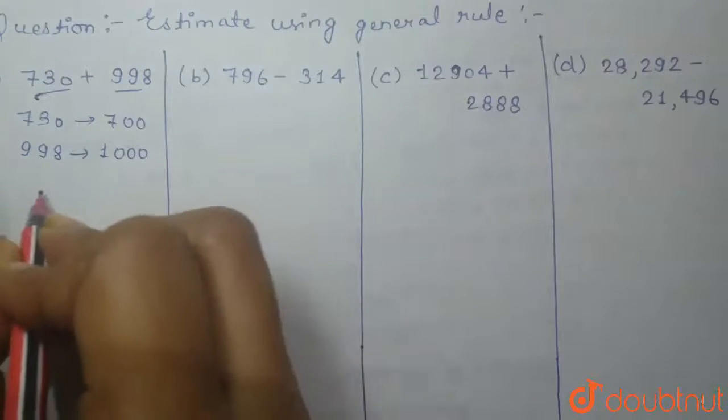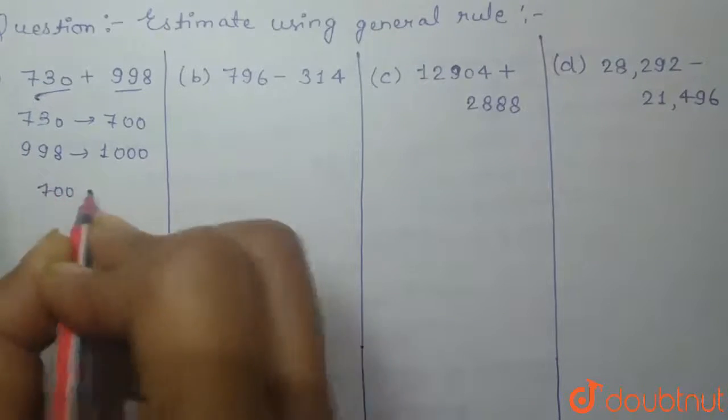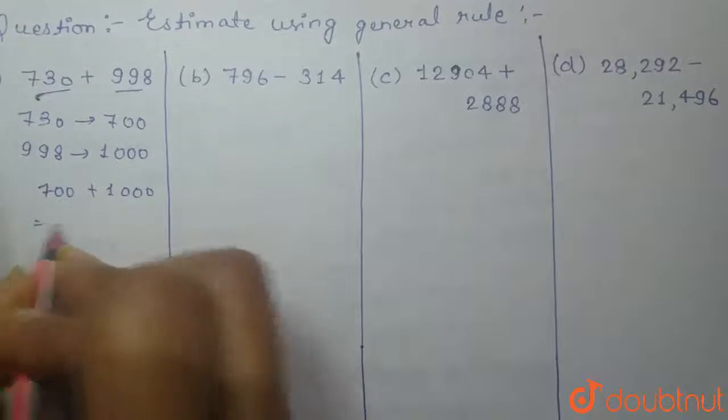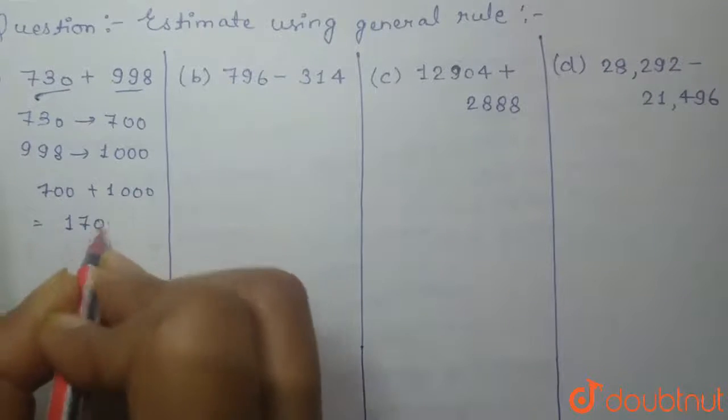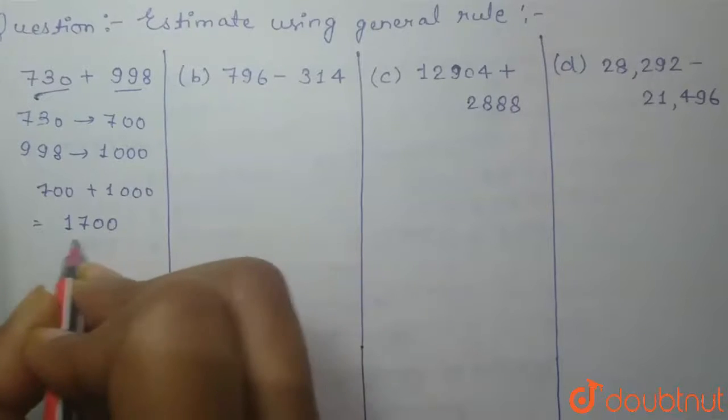And if we take sum of both 700 and 1000, it will give us 1700. This is our first answer.